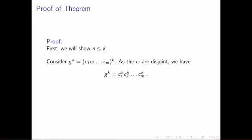Now we're ready to go on in our proof. Let's show the first inequality: n ≤ k, where n is the order of g and k is the least common multiple of the orders of the c_i's. We're going to take g and raise it to the kth power. That equals c1 · c2 · ... · cm raised to the kth power. Using our first observation — the c_i's are disjoint, so they commute — we can distribute that power. So g^k equals c1^k · c2^k · ... · cm^k.